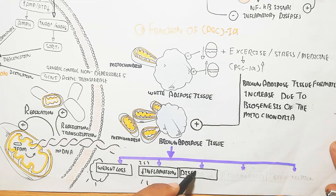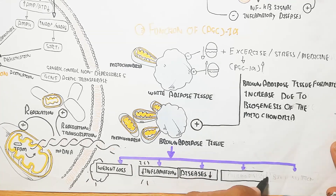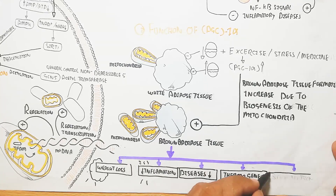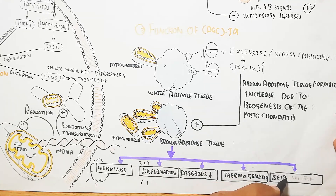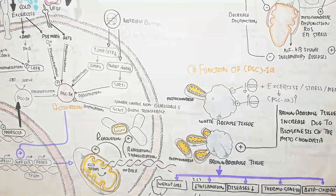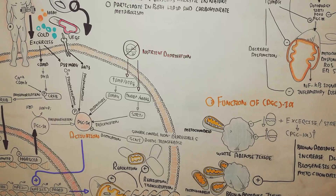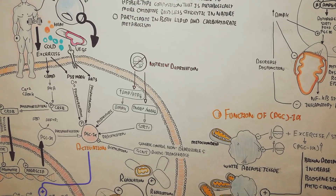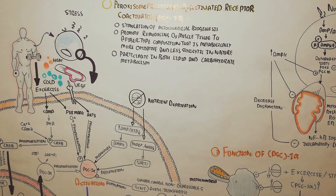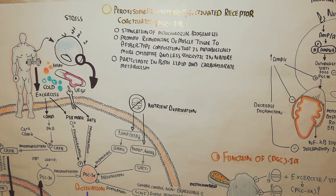Increased food intake inhibits this conversion. Brown adipose tissue is important for weight loss, decreased inflammation, reduced disease, thermogenesis, and beta-oxidation of fatty acids. Thermogenesis increases heat production, which is especially relevant during cold weather. This concludes the overview of PGC1-alpha physiology.